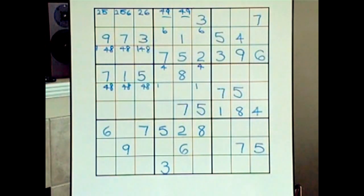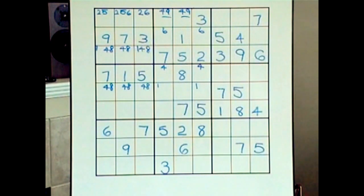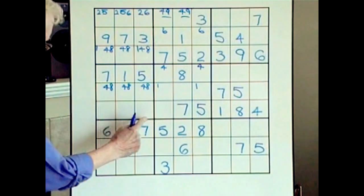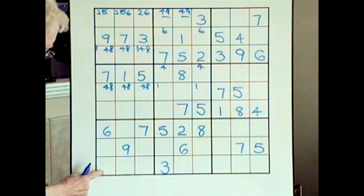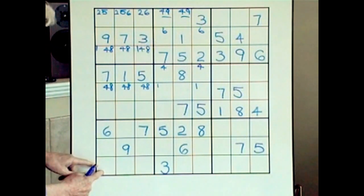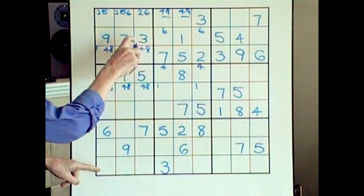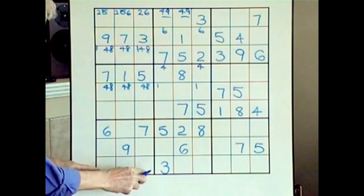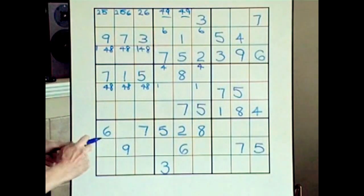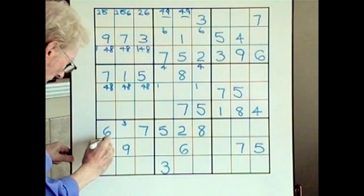Nines — no nines in these middle blocks horizontally. Now we go to the bottom horizontal blocks. Ones — no ones. Twos — lots of places for the two. Threes — there's one three. Let me do a cross and see if that helps. If I go across here, looking at this block, that eliminates those three cells. And if I take this three up here and go down here, that eliminates that cell — so the three could go either here or here.